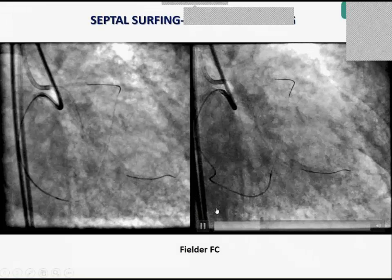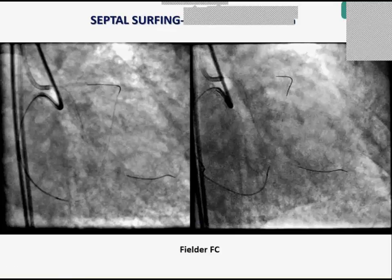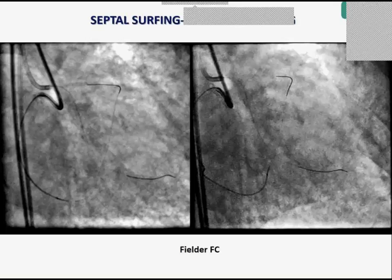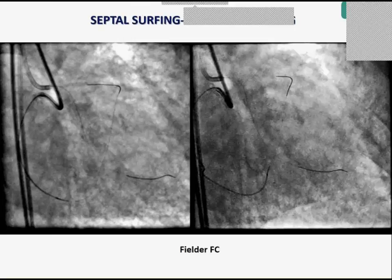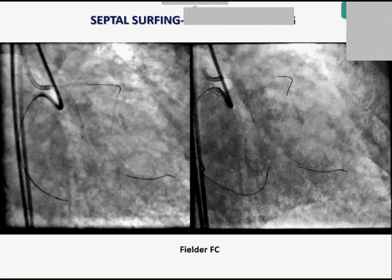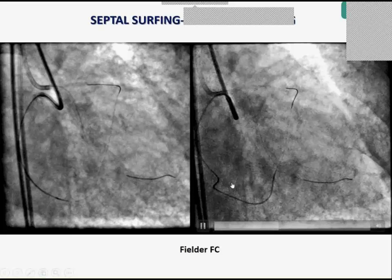Regarding tip curve size: you pre-select your branch by reviewing the angiogram and enter it with a non-dedicated curve, always surfing with that same curve. If this fails in the first 30 seconds, advance the microcatheter, remove the Fielder FC wire, and take a Sion with a dedicated curve. In about 80% of cases the surfing will be successful within 10-20 seconds. If it fails, go to more dedicated approaches: surf with a dedicated tip wire like the Sion, then tip injections.